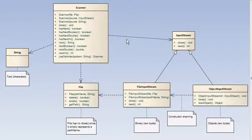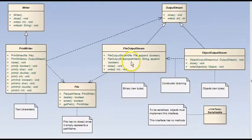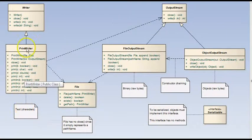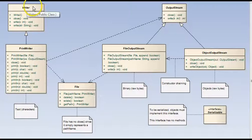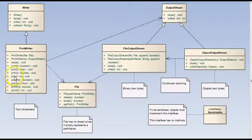Now we're going to move over to the output class diagram. This class diagram shows some of the classes that can be used for output to files. Again, we have the three types represented here. Text output uses PrintWriter. PrintWriter can be used for text output and it inherits from this abstract Writer class. PrintWriter has functions very similar to System.out — print line and print.